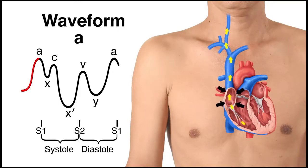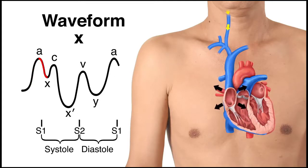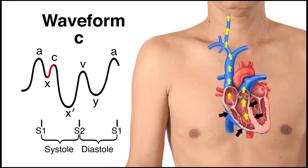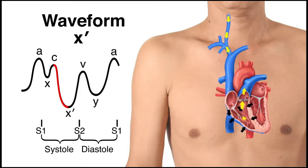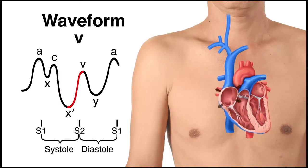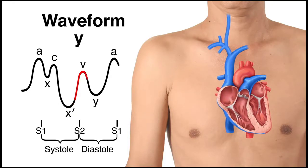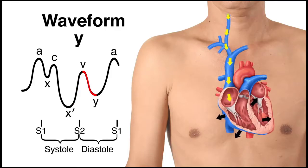The A wave corresponds to right atrial contraction; its peak denotes the end of atrial systole. The X' descent denotes right atrial relaxation. The C wave denotes right ventricular contraction and closure of the tricuspid valve. The X' descent, which begins during ventricular systole, reflects the downward movement of the right atrial floor and contraction of the right ventricle. The V wave corresponds to right atrial filling, and the Y' descent, which begins during diastole, reflects the filling of the right ventricle after the opening of the tricuspid valve.